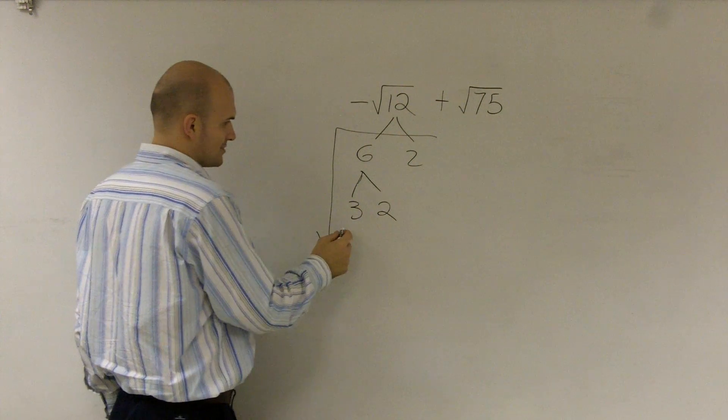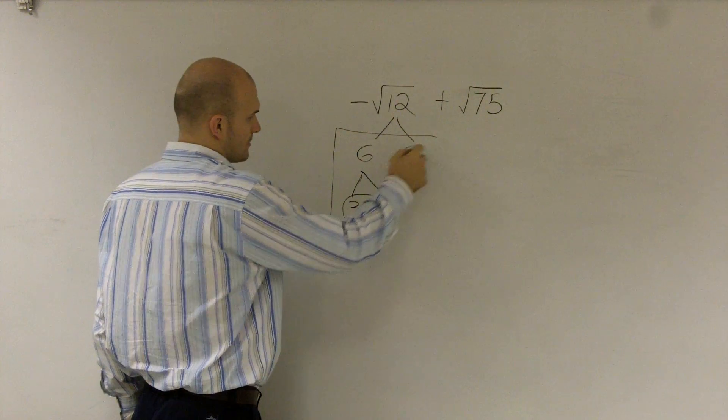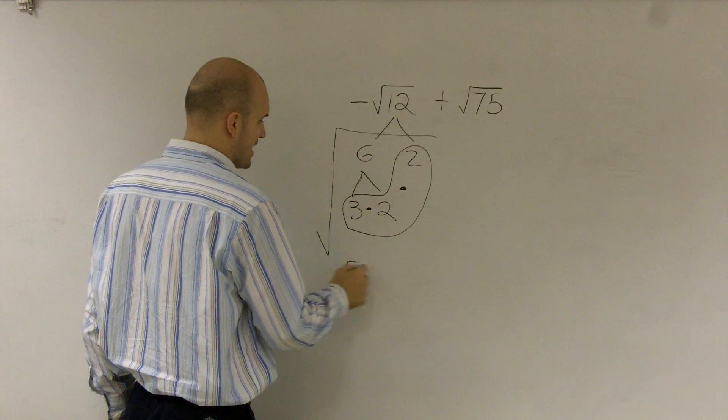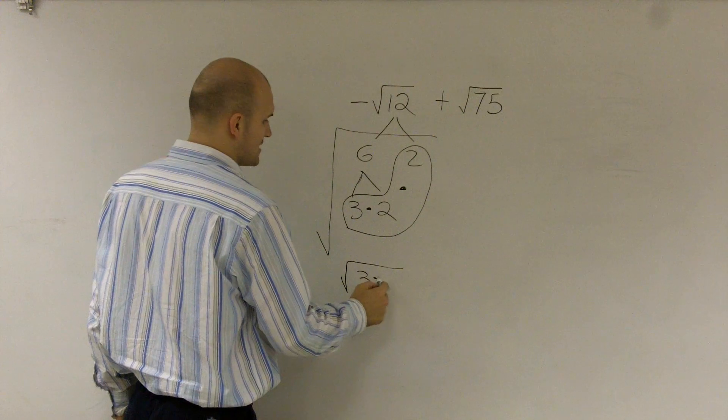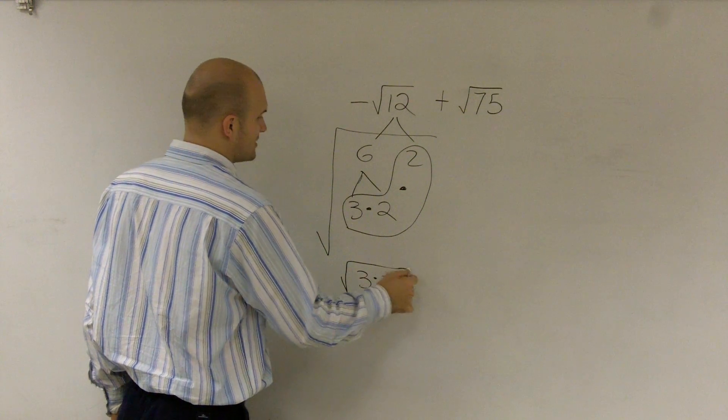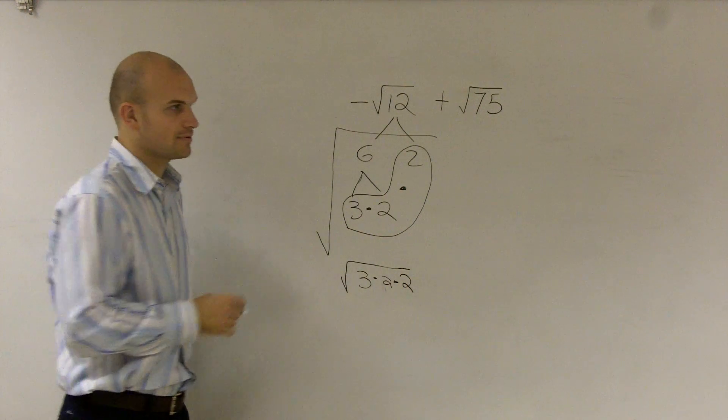So here's my final answer. I have 3 times 2 times 2. So really what I have is 3 times the square root of 2 times 2. And what that equals is that that equals 12, right?